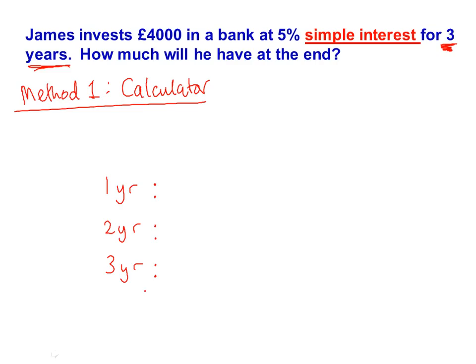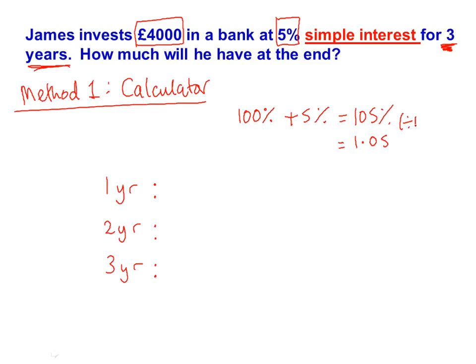We read the question: we've got £4,000 in the bank and the interest is 5% per year, so it's going up by 5% per year. We start with 100% and add on 5%, which gives us 105%. We then change this into a decimal — as a decimal this is 1.05, because to change it we divide by 100. So 1.05 is the number we multiply by.